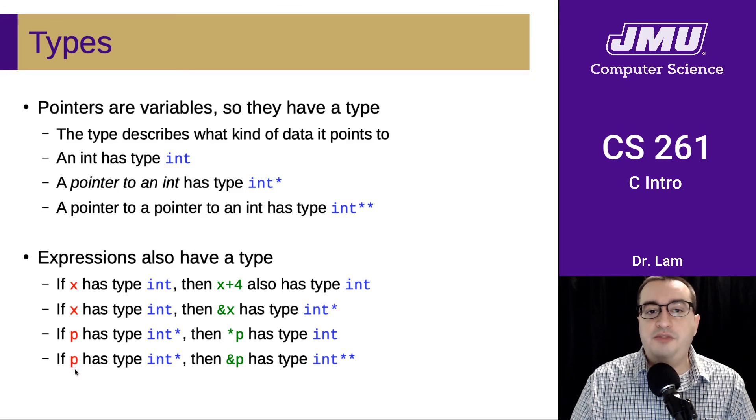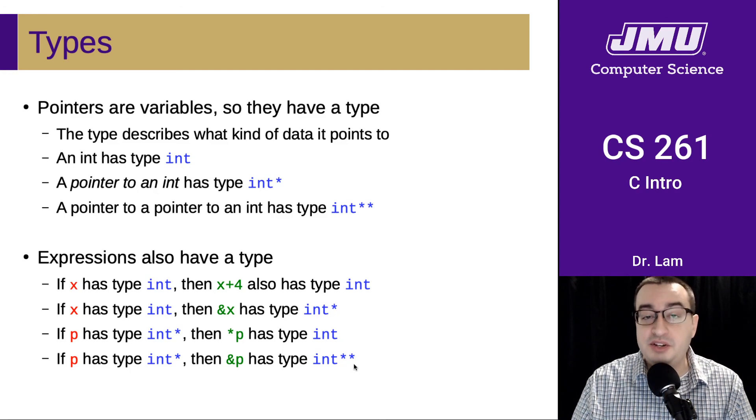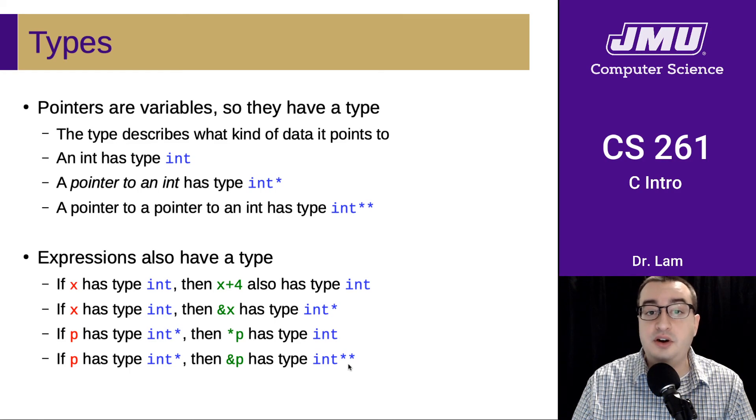So for the last example here, if P has type int star, then the address of P, so if this is a pointer already, a pointer to an integer, and we take the address of that, what we're going to have is a pointer to a pointer to an integer, or an int star star.